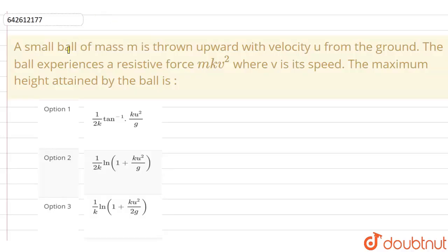In this question, a small ball of mass m is thrown upward with velocity u from the ground. The ball experiences a resistive force mkv squared where v is its speed. We have to calculate the maximum height that is attained by the ball.